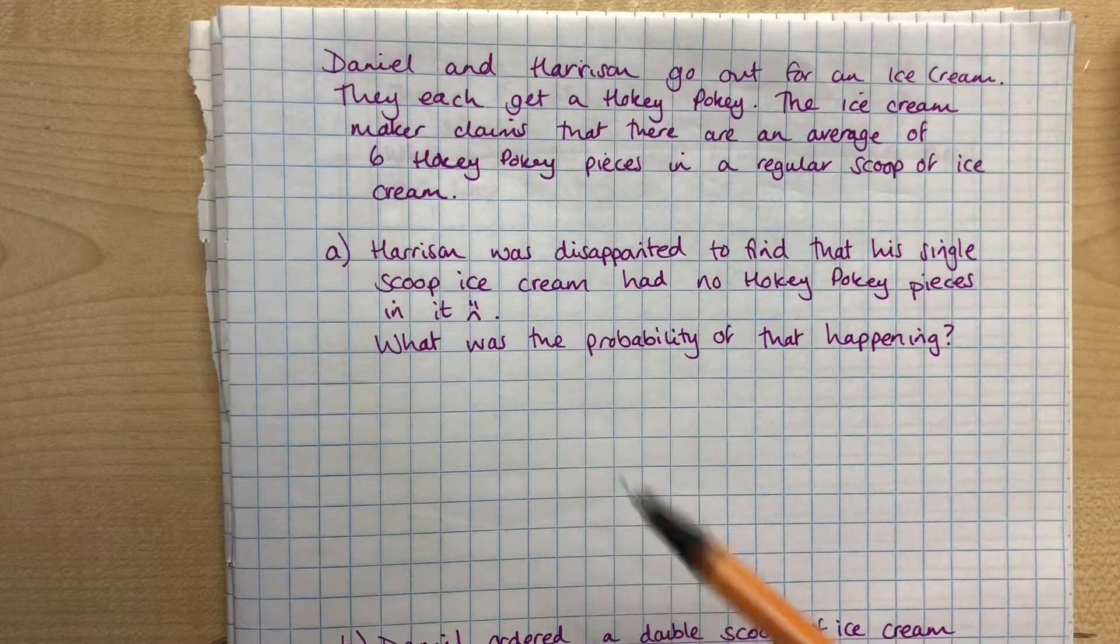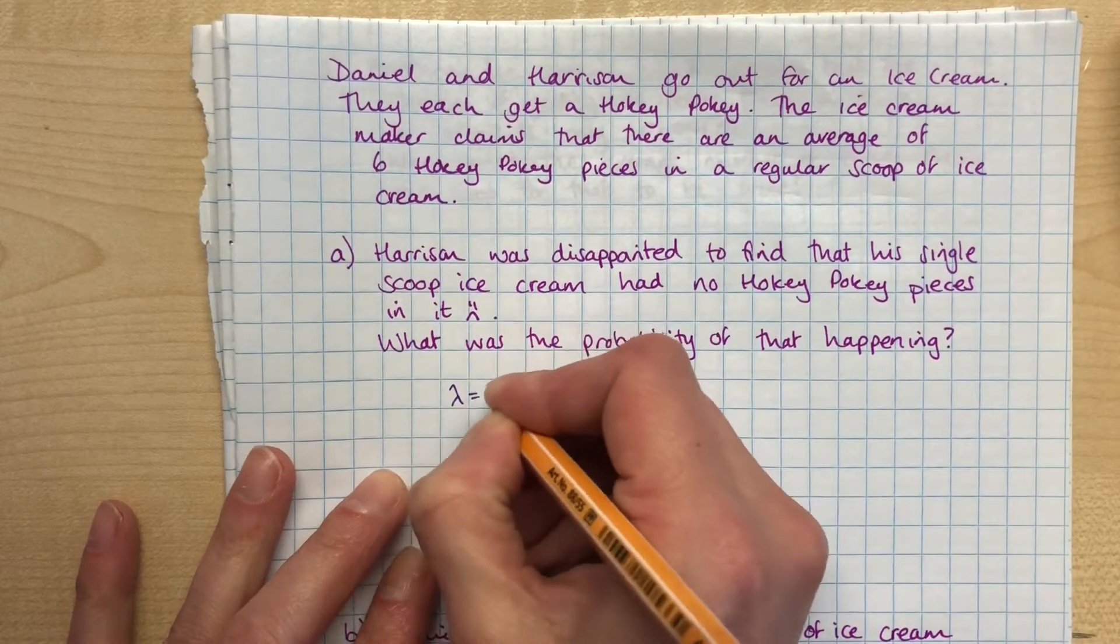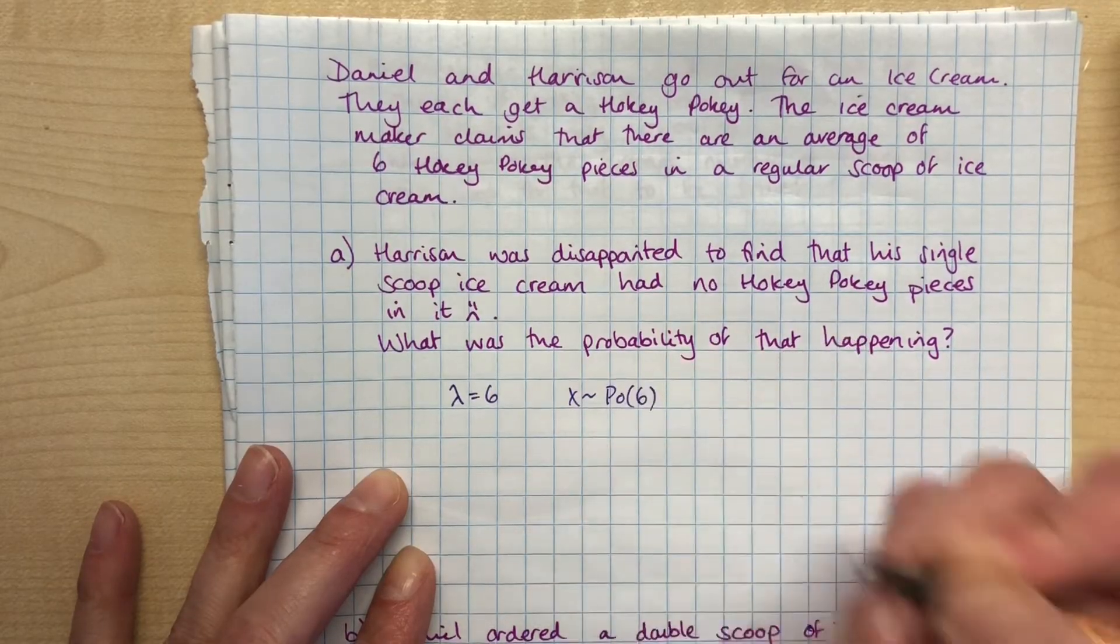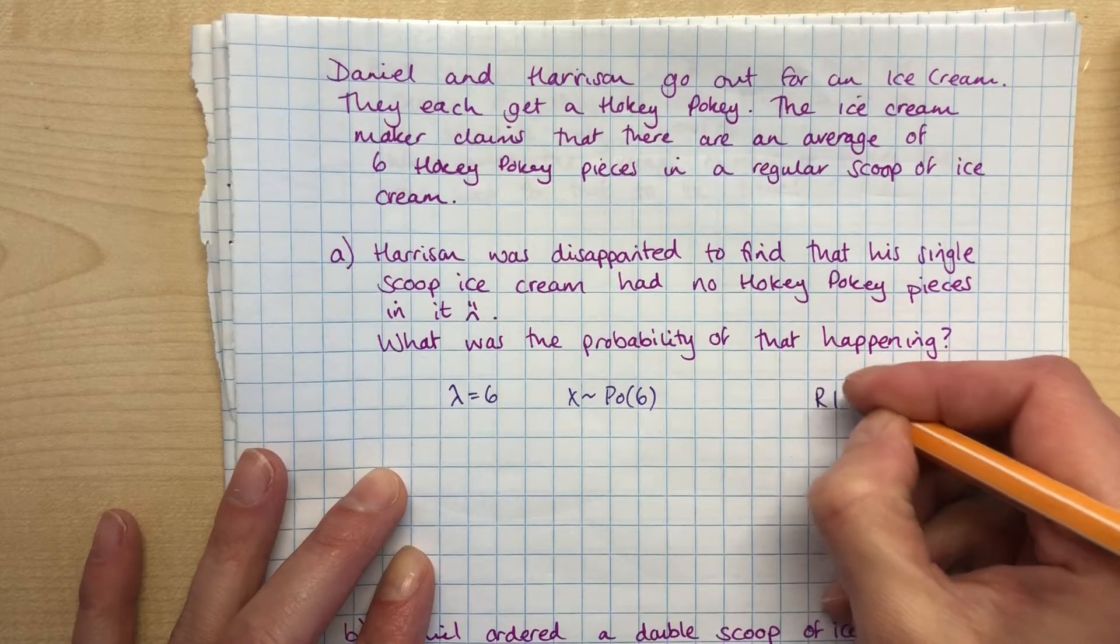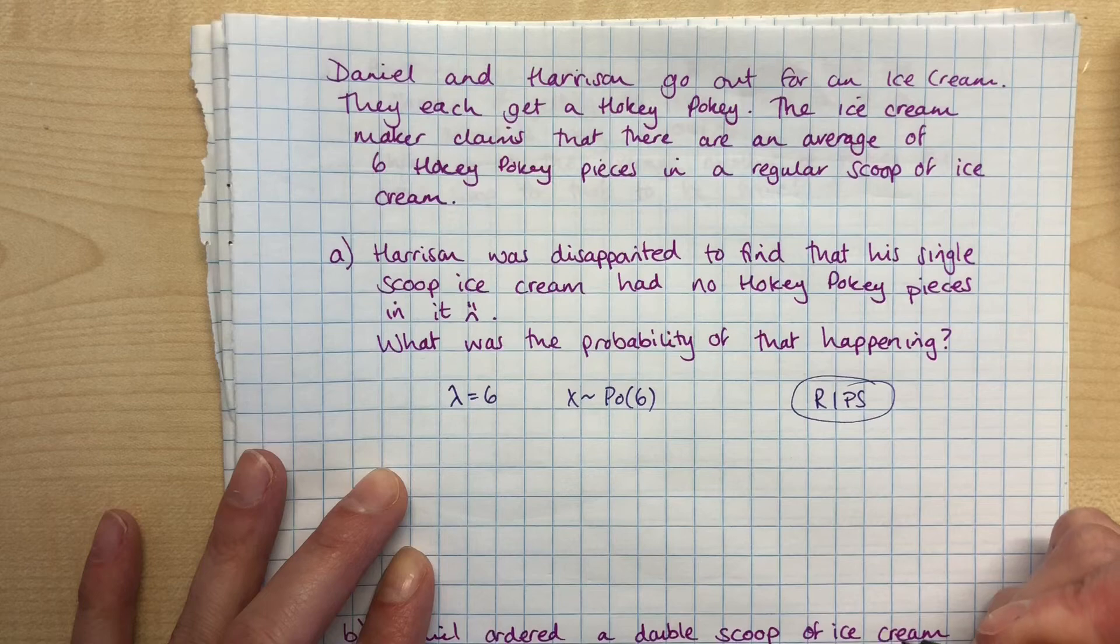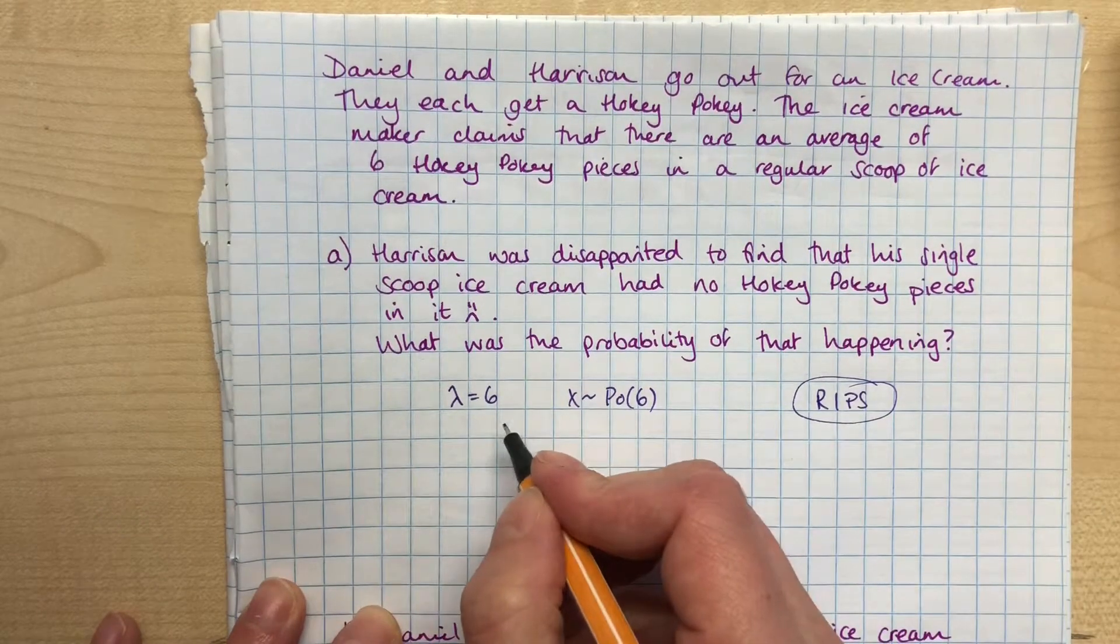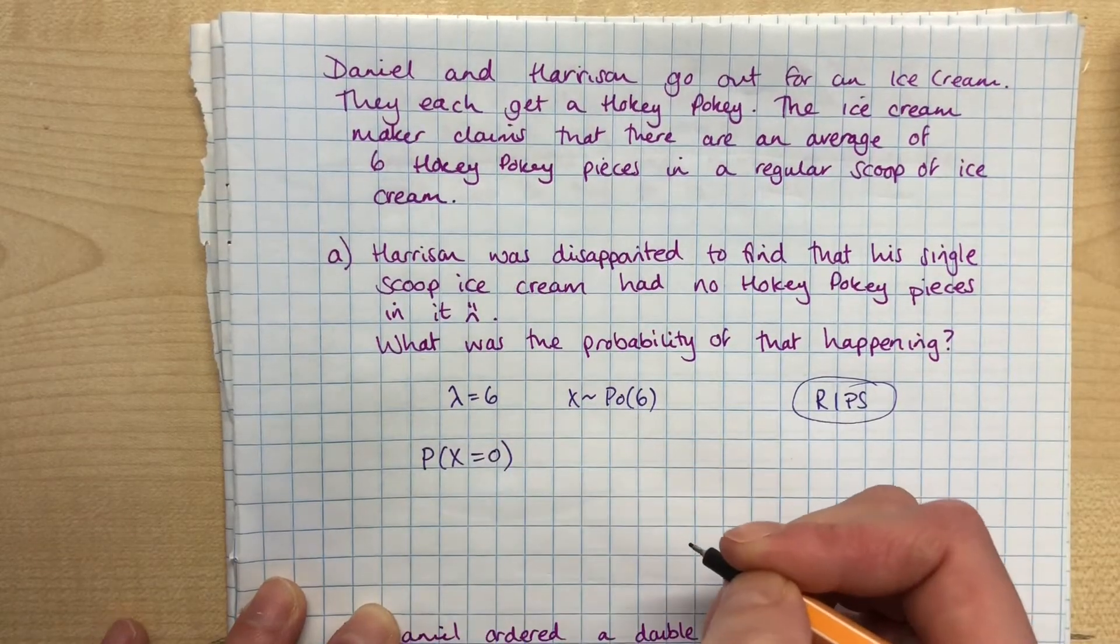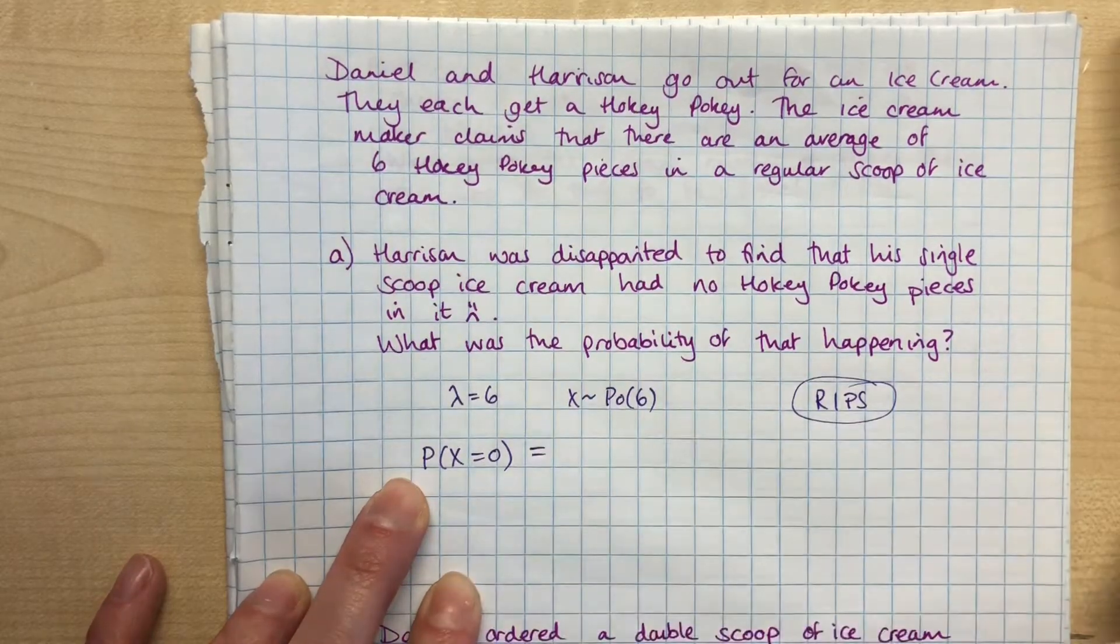He tries to work out what's the probability of that happening. This one follows a Poisson distribution - we're told the average is six, so lambda is six. We can write that X follows a Poisson distribution because it fits the acronym RIPS. You can go watch the video on RIPS to figure out why it fits that acronym. So if it follows a Poisson distribution with lambda six, we want to find out what's the chance that we got no pieces of Hokey Pokey - so what was the probability of X being zero.